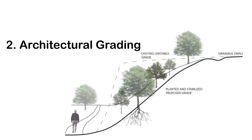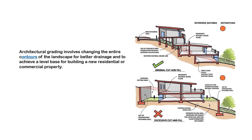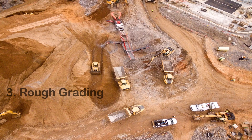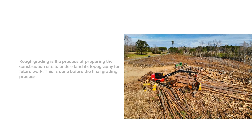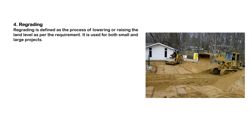The second type is architectural grading. Architectural grading involves changing the entire contours of the landscape for better drainage and to achieve a level base for building a new residential or commercial property. The third type is rough grading. Rough grading is the process of preparing the construction site to understand its topography for future work. This is done before the final grading process, and involves the removal of vegetation, cleaning debris, and leveling the soil to create a stable base for construction.